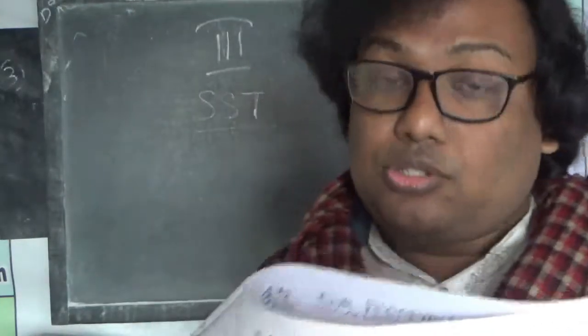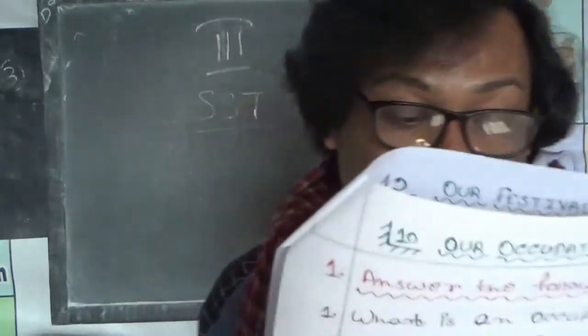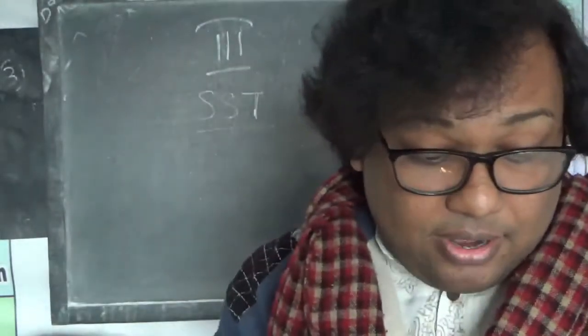Number 3: 1 is 15th August. 2 is 2nd October. 3 is 25th December. Match the following: 1 is C, 2 is D, 3 is A, and 4 is B.